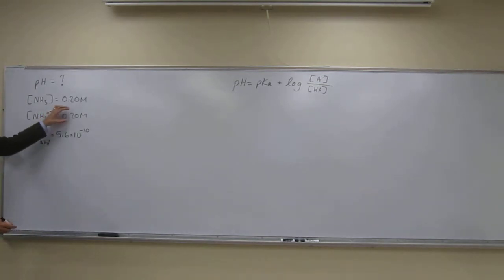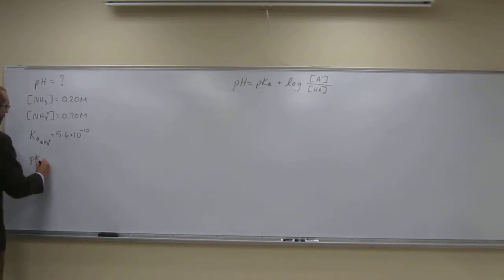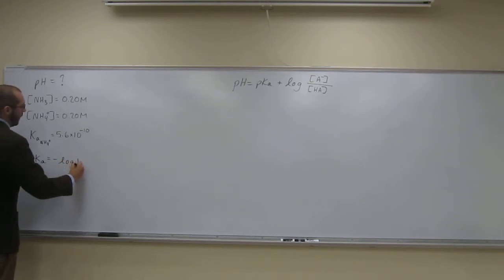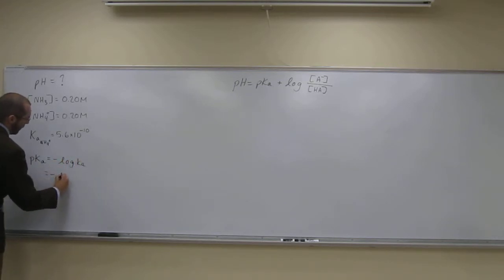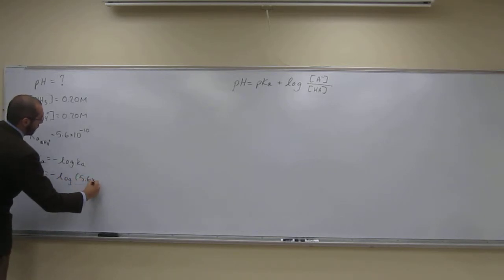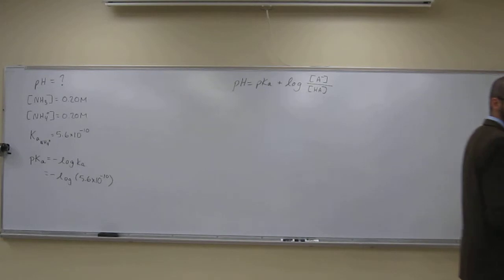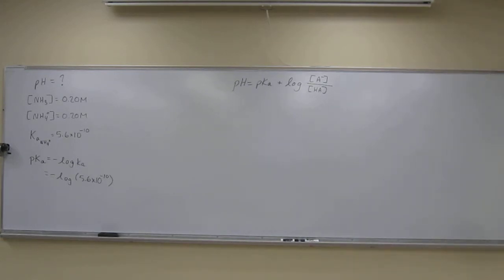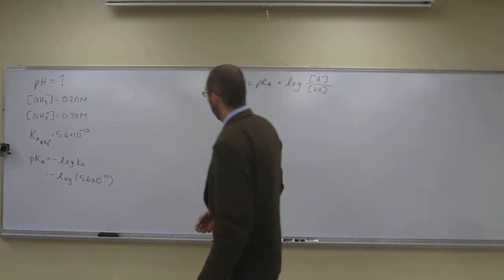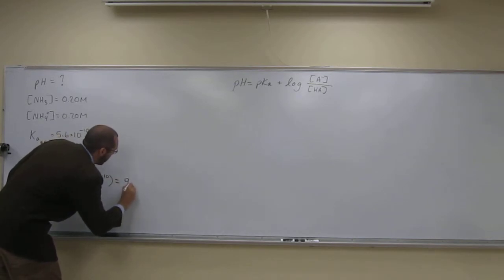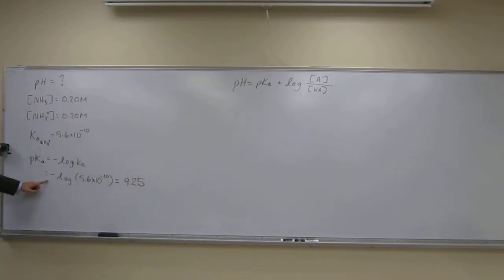That's nice because we have the concentration of both species and we have the Ka. The pKa is going to be the negative log of Ka, so that's the negative log of 5.6 times 10 to the negative 10. When we calculate that, we get 9.25 as the pKa.